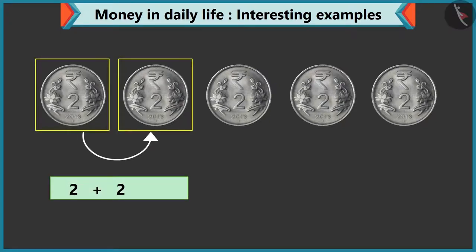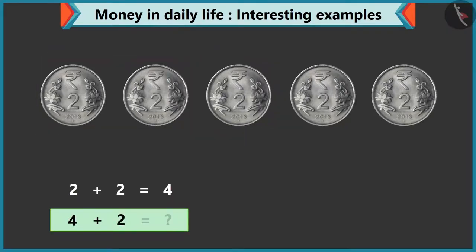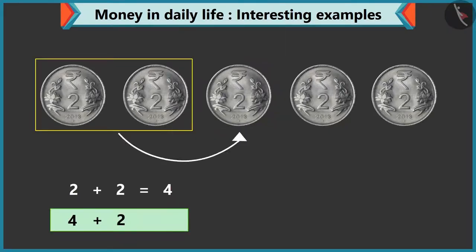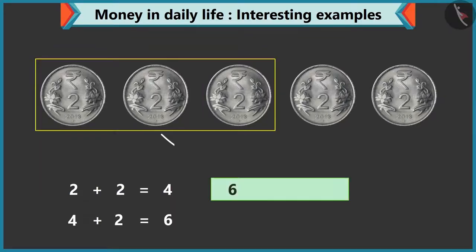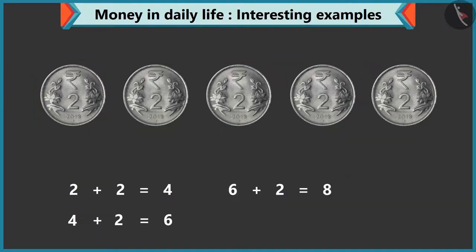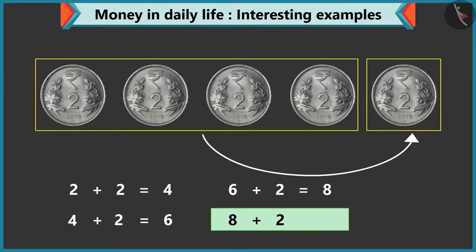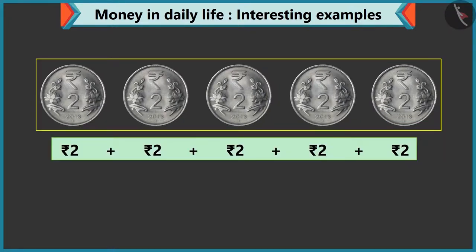Look Chi Chi: adding 2 to 2 makes 4. How much will you get by adding 2 to 4? If we add 2 to 4, we get 6. Well done Chi Chi! Then 8 by adding 2 to 6, and 10 by adding 2 to 8. Yes — 5 coins of 2 rupees equals 10 rupees.